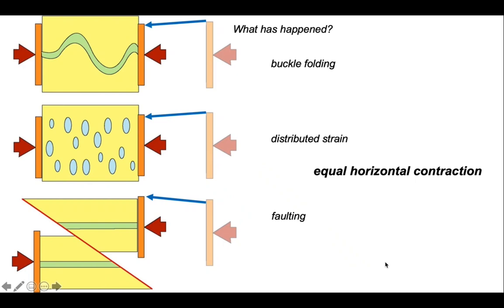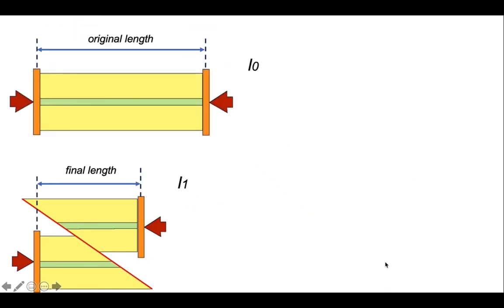Let's look at the bottom diagram and quantify the amount of contraction. This is simply the difference between the original length, which we can call L0, and the final length of the model, which is L1. This comparison in structural geology is called the longitudinal strain, E, which stands for elongation. It's simply the difference between the original length and the final length divided by the original length.